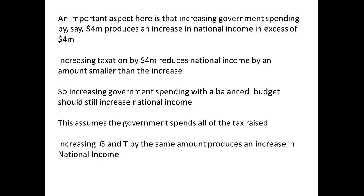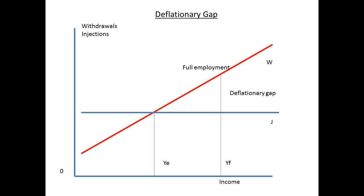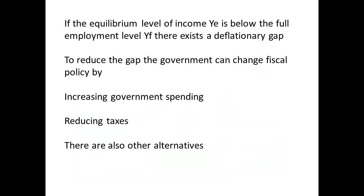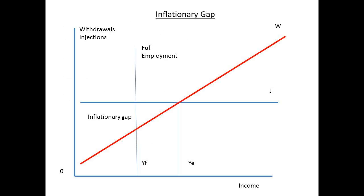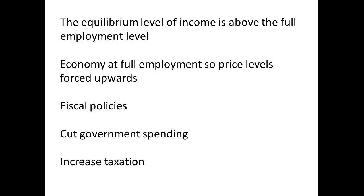Government intervention can be used to change the economy in the short run. If the full employment level of income is YF and the current point is YE, then there is not full employment — we say there is a deflationary gap. Governments can alter course through changes in fiscal policy, which may increase government spending or reduce taxes. If the equilibrium level is above the full employment level, it cannot be attained — we say there is an inflationary gap. If the economy is at full employment level, prices are forced upwards. Fiscal policy options then include cutting government spending and raising taxes.